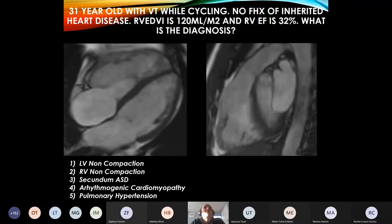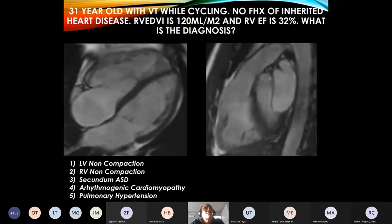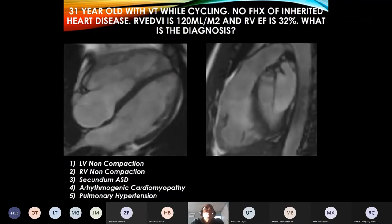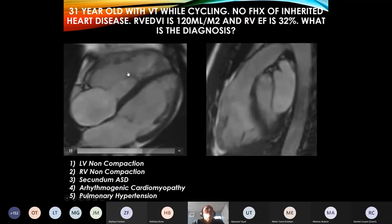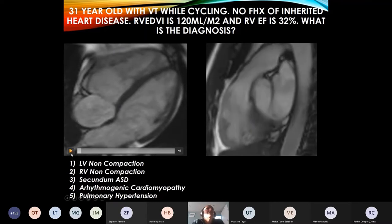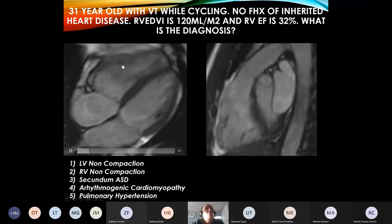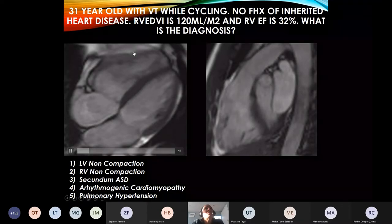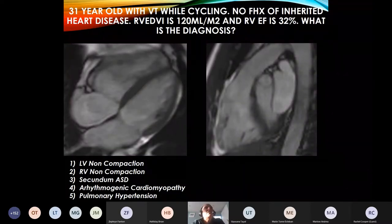Here's a 31-year-old who presented with VT while cycling, no family history of inherited heart disease. His right ventricular end-diastolic volume index is 120 mls per metre squared — mildly elevated — and his right ventricular ejection fraction is 32%, which is low. What you saw in the four-chamber view was a dilated right ventricle that doesn't contract as well as it should, with regional wall motion abnormality — this area contracting better than that area. This is classic arrhythmogenic cardiomyopathy. He also has a bit of scar in the lateral wall, so there's left ventricular involvement as well — moving away from the idea of pure ARVC.